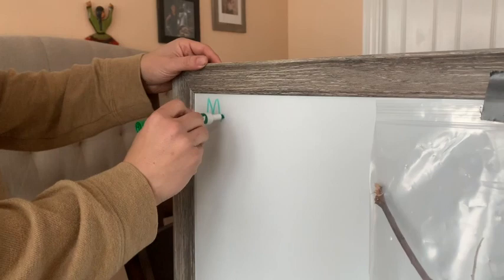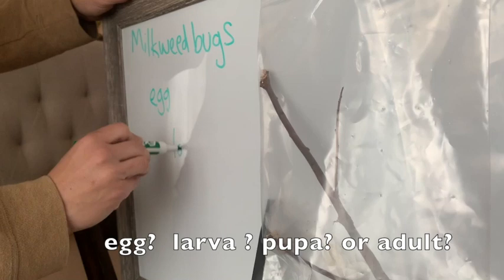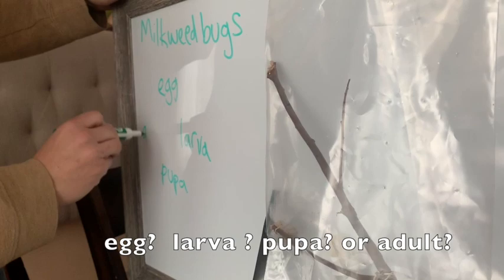These are milkweed bugs. Now do we think these are in the egg stage? Larva? Pupa? Or adult?